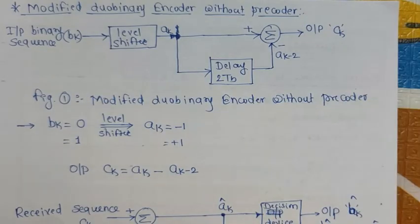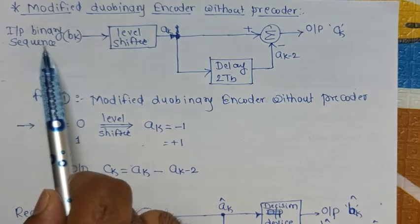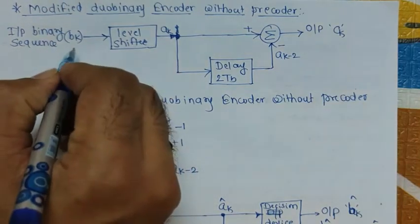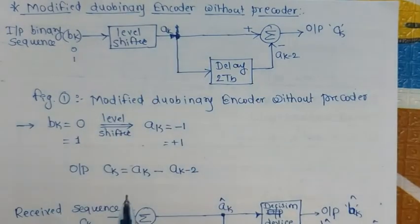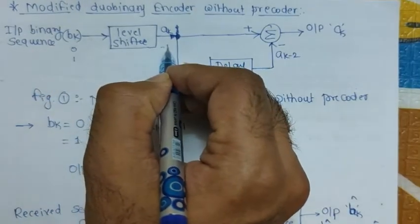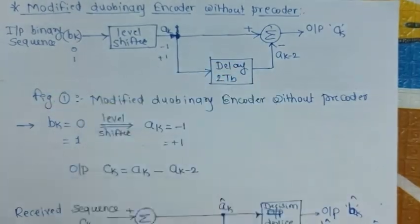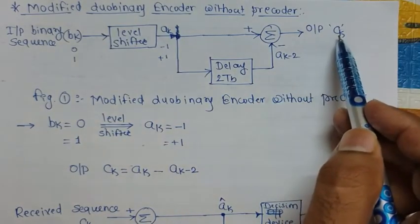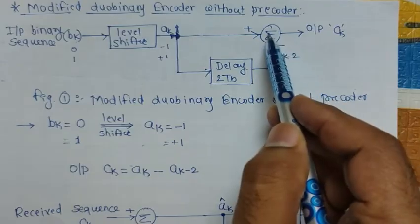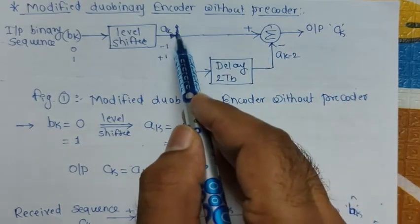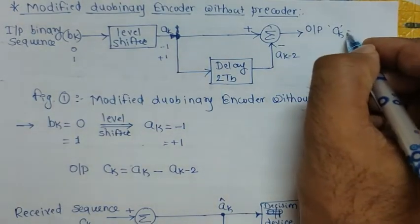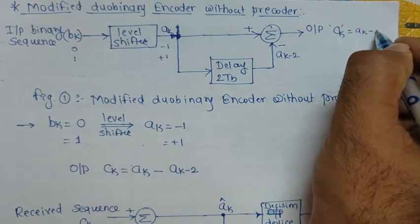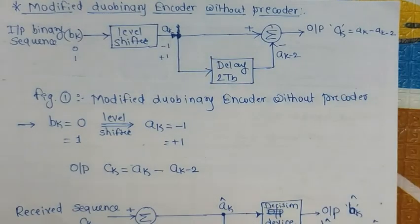The input binary sequence bk can have either zero or one value and is first given to the level shifter, which outputs ak. If bk is zero, ak gets minus one; if bk is one, ak gets plus one. The output ck is from a subtractor with two inputs: ak as-is, and ak delayed by two bits (ak minus 2). So ck = ak minus ak_minus_2.